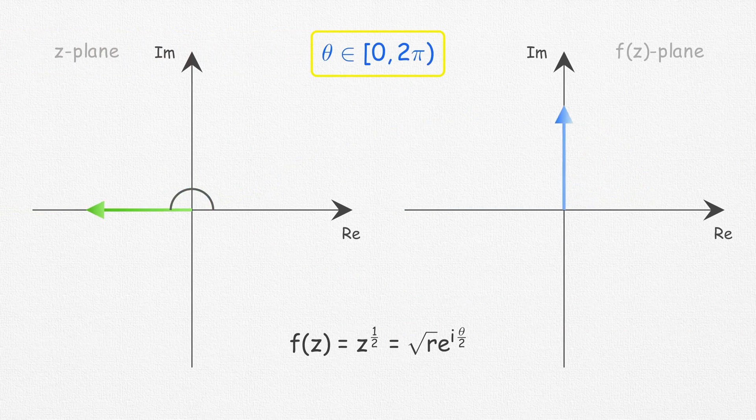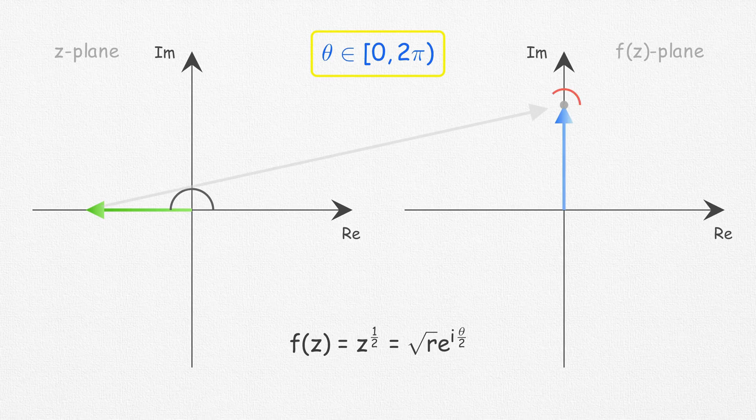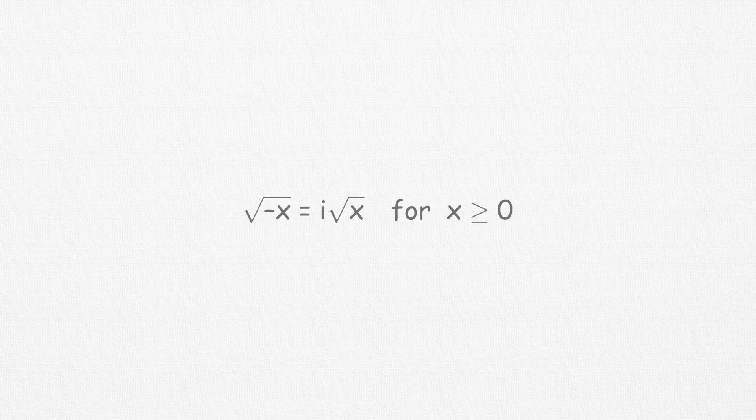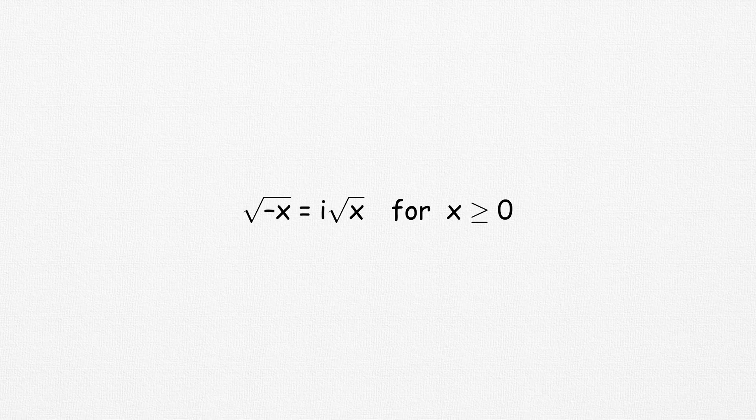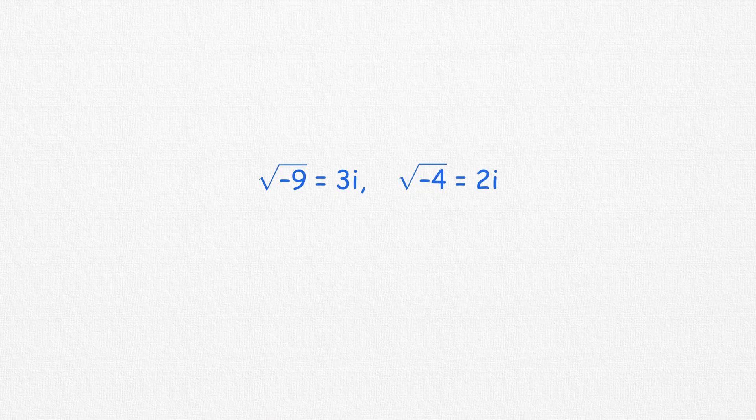Now if you observe, the square root of minus 1 maps exactly to one point in the f(z)-plane. Wherever nothing is mentioned in the problem, we always take the principal branch. Thus, the square root of any negative number is i times the square root of its absolute value. Using this, root over minus 9 becomes 3i, not plus minus 3i, and root over minus 4 becomes 2i, and their product is minus 6, which indeed is the correct answer.